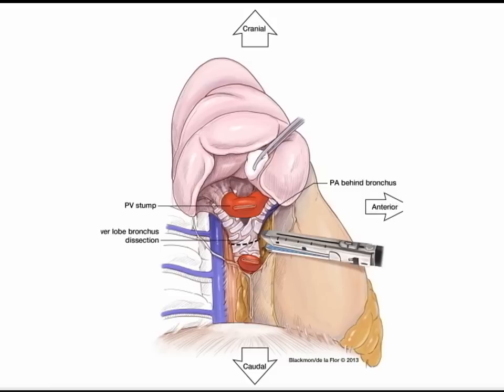Occasionally, it may be possible to encircle, staple, and divide the right lower lobe bronchus leaving the superior segmental branch to be taken at a later time. Typically, it is possible to angle the stapler slightly oblique to avoid stapling or narrowing the right middle lobe bronchus while including the superior segment right lower lobe bronchus. When passing the stapler, an insufflation test is recommended to ensure you have not inadvertently narrowed any passages. Always be aware that the pulmonary artery is just on the other side of the bronchus.